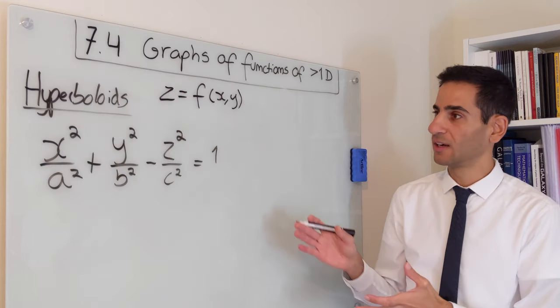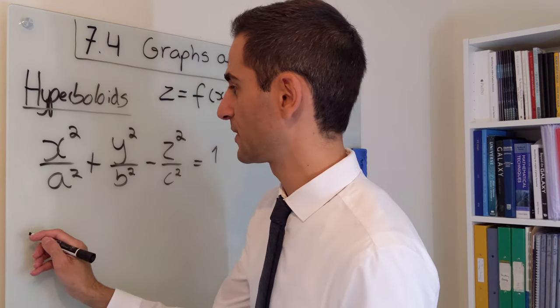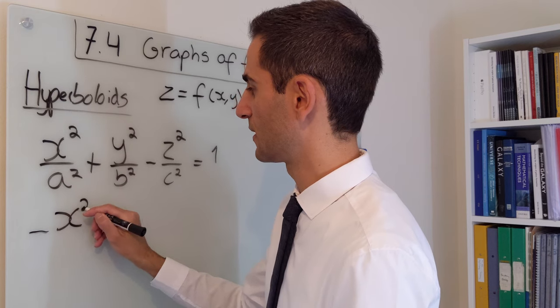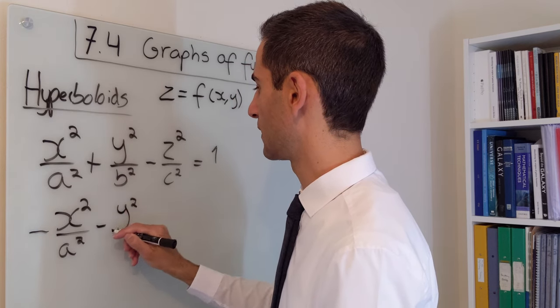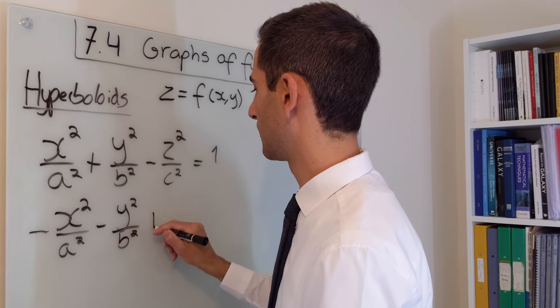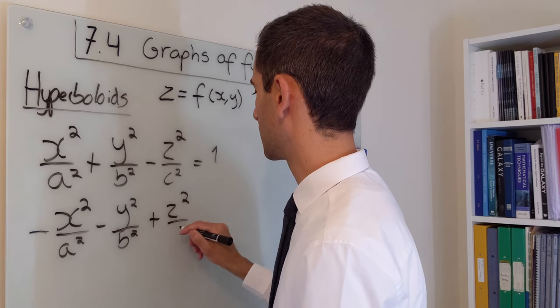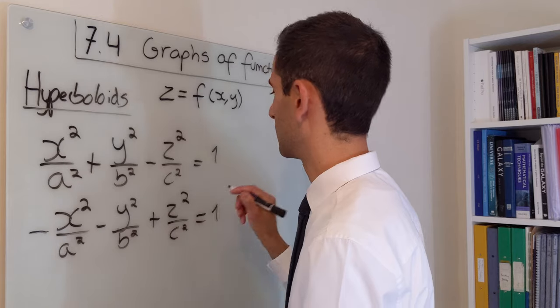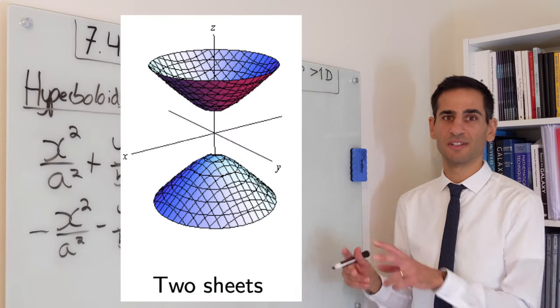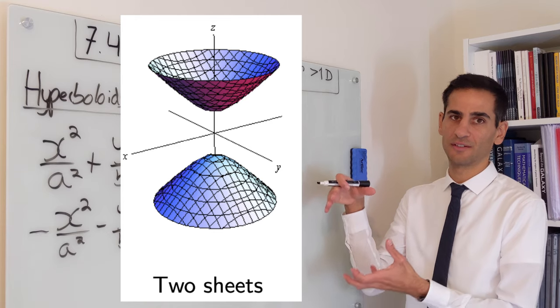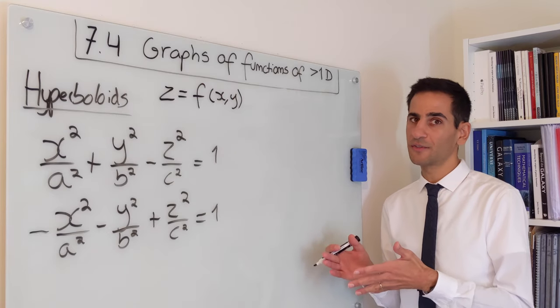What you can do is if you flip the signs to minus x² over a² minus y² over b² plus z² over c² equals 1, you still get a hyperboloid but with different topology. You're essentially cutting it off and now there's two sheets.